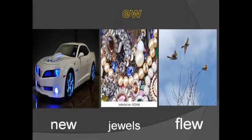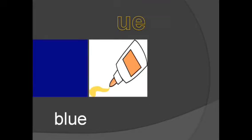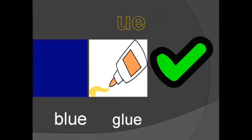Now what about 'ue'? Yes, 'blue' - u-e, blue. And 'true' - listen carefully to how I pronounce it: true. So that's 'true' with u-e.